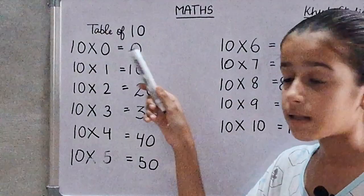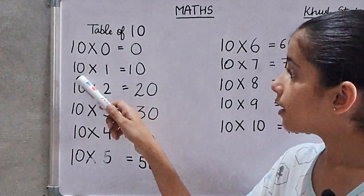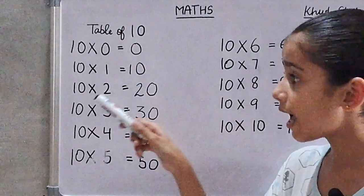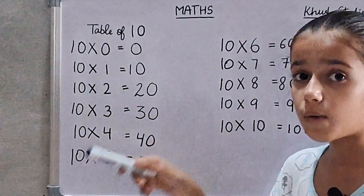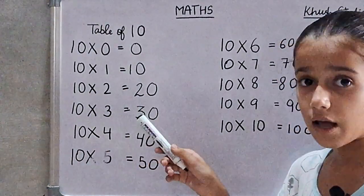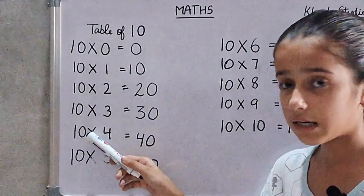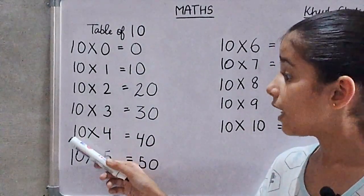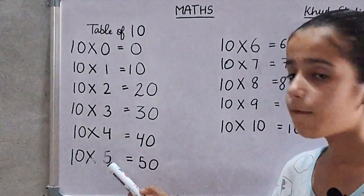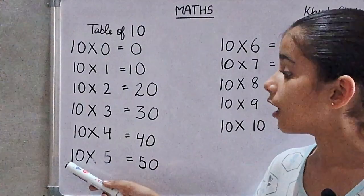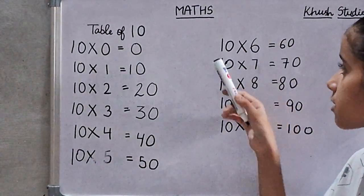Ten zeros are zero. Ten ones are ten. Ten twos are twenty. Ten threes are thirty. Ten fours are forty. Ten fives are fifty. Ten sixes are sixty.